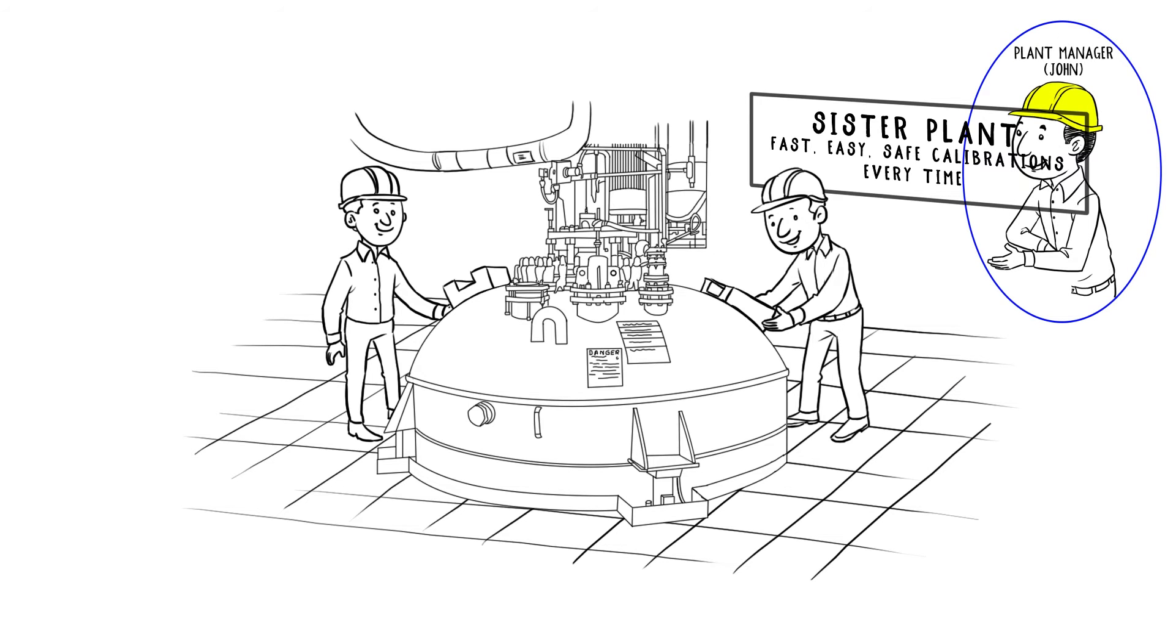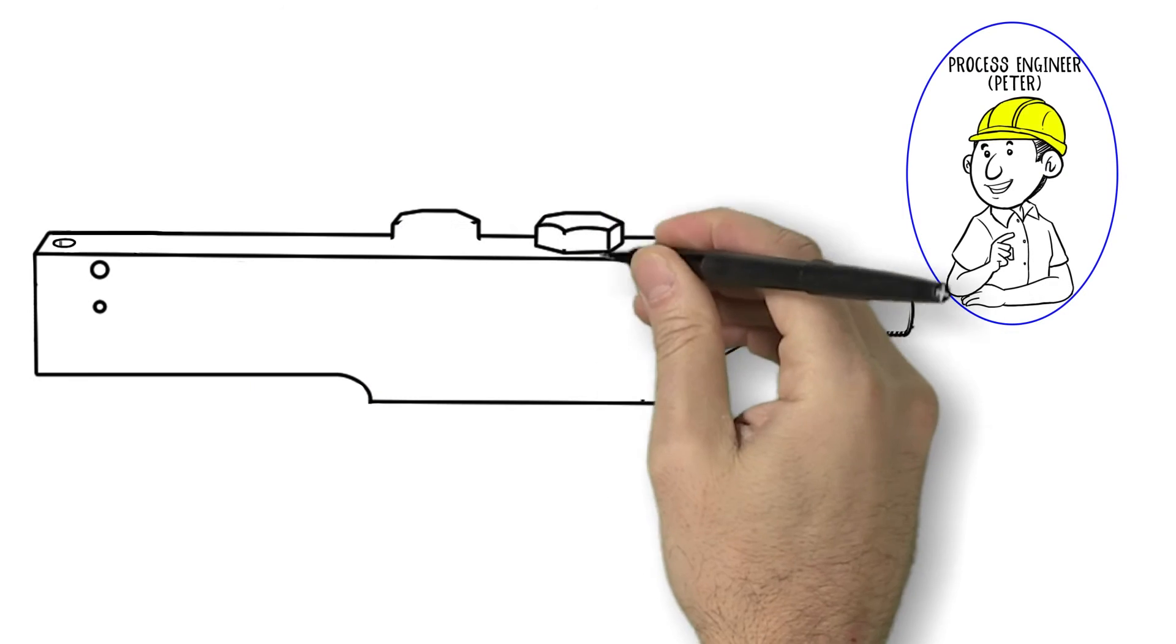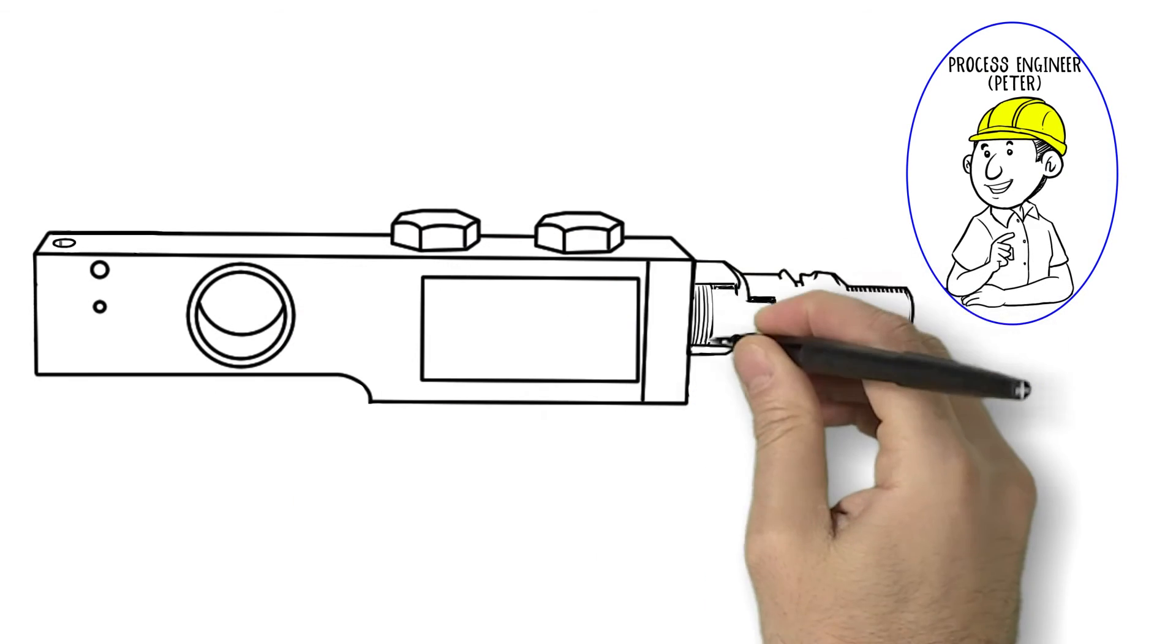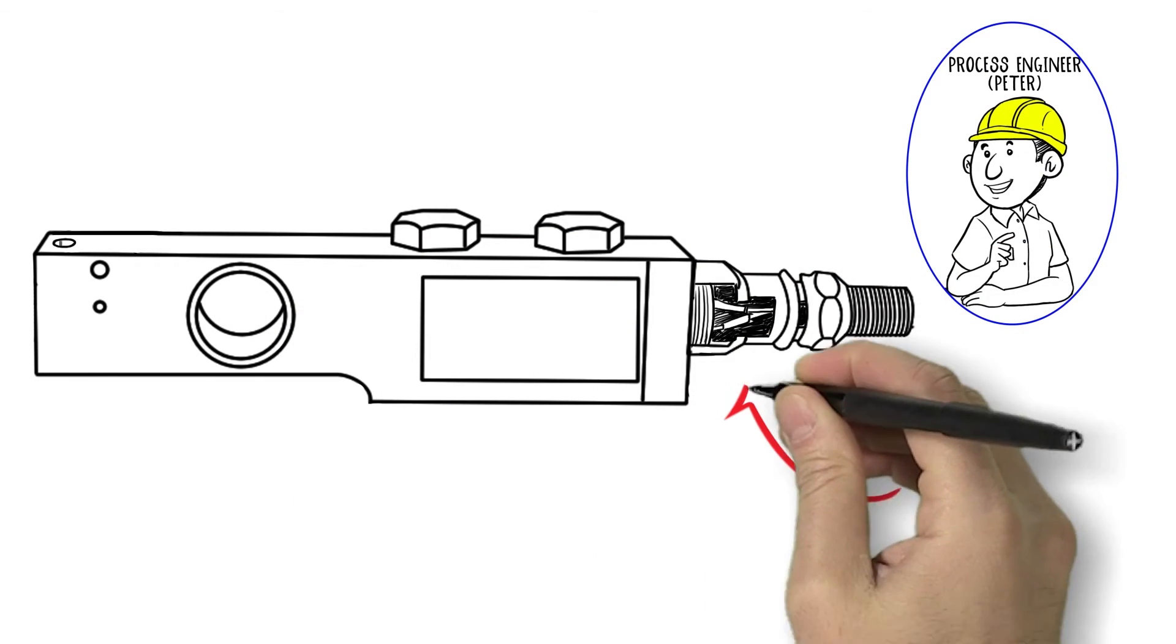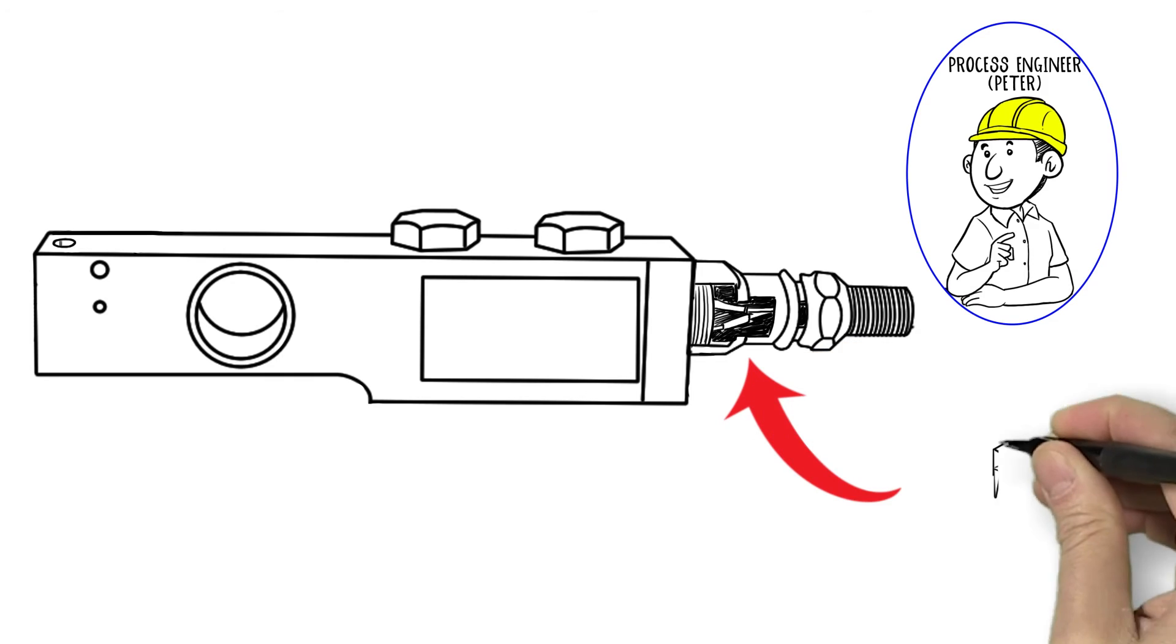How can Hardy scales cut calibration time in half? Hardy load cells are pre-calibrated. They store unique calibration data on each load cell, so we don't need to load a single test weight to calibrate the scales. It's already done. All we have to do is validate Hardy's calibration with a small test weight, typically about one-eighth of the test weight normally required.